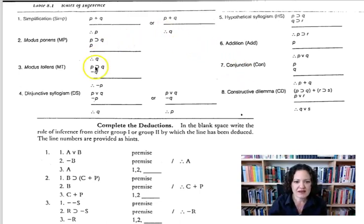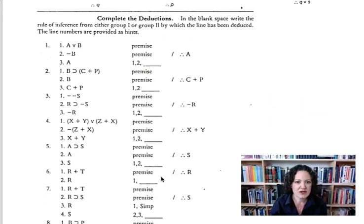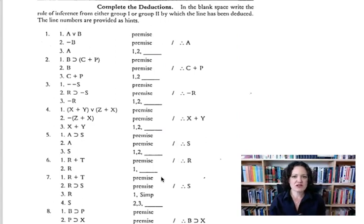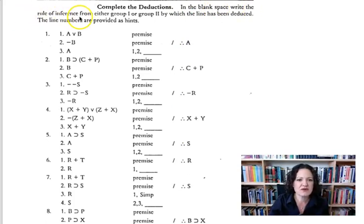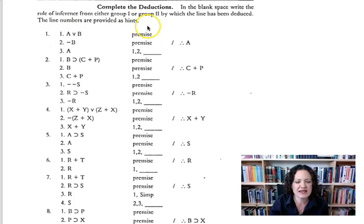I have taken the top part off and put it on my iPad so I can show you what's going on. Down here we can see there are some problems for you to do. It says in the blank space, write the rule of inference from either group 1 or group 2 by which the line has been deduced. The line numbers are provided as hints.